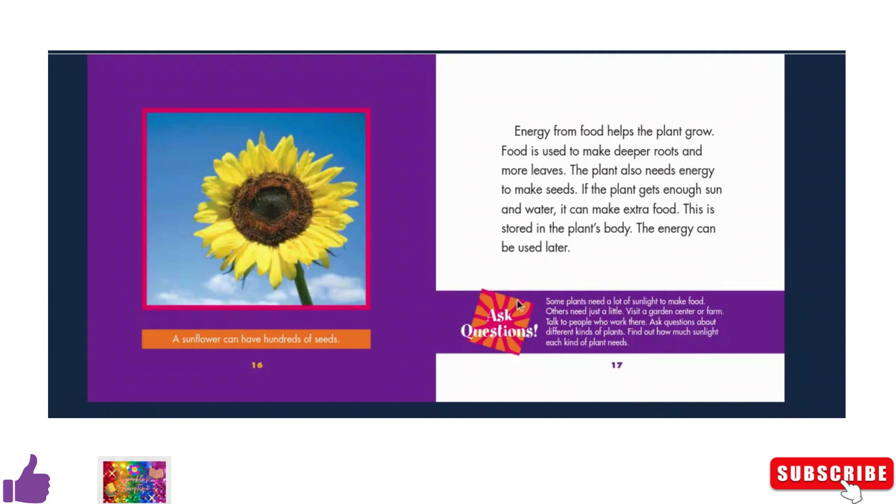Let's ask questions. Some plants need a lot of sunlight to make food. Others need just a little. You can visit a garden center or farm and talk to people who work there. Ask questions about different kinds of plants. You can find out how much sunlight each kind of plant needs.